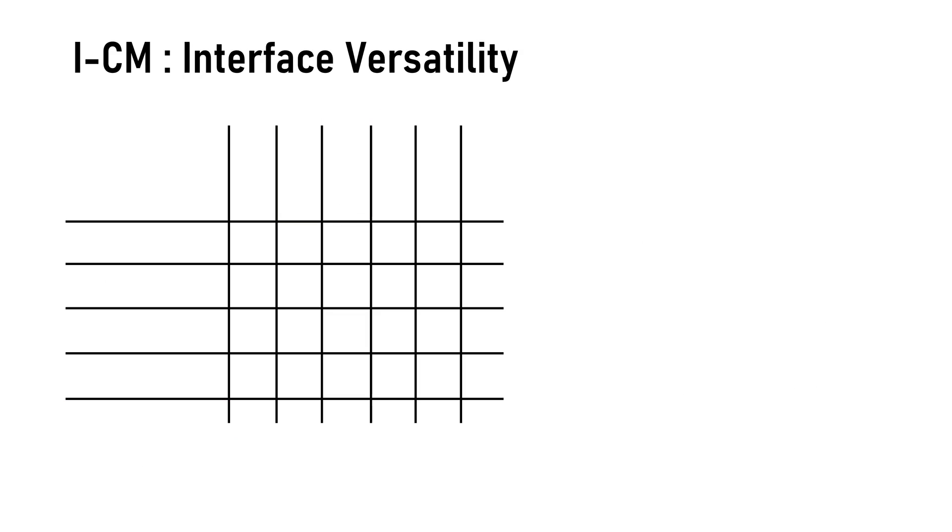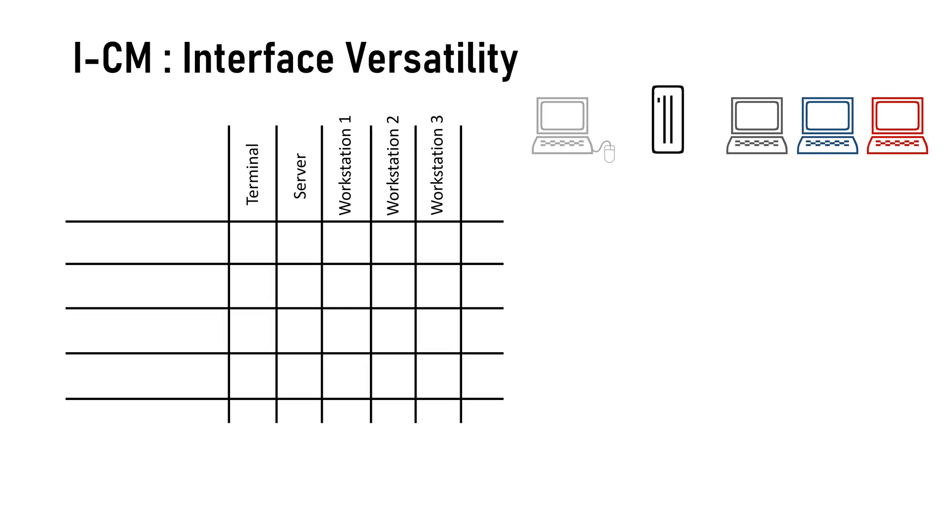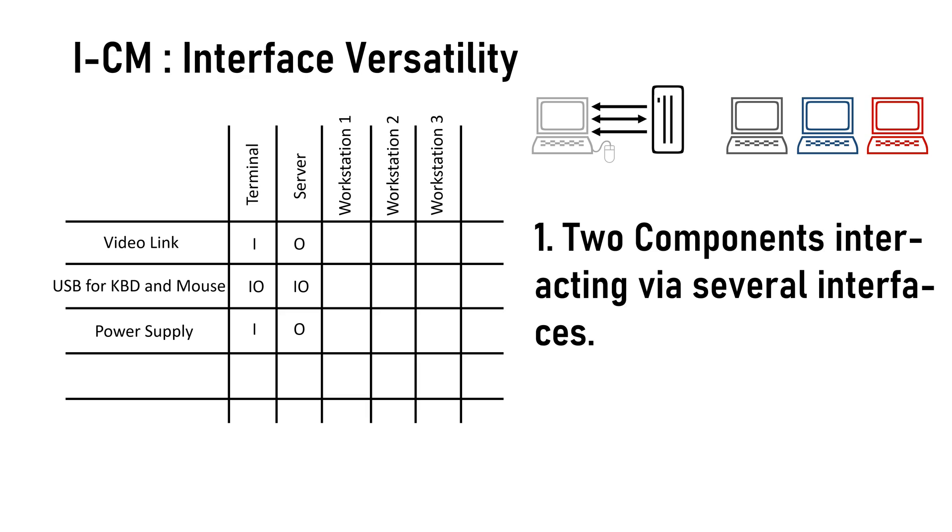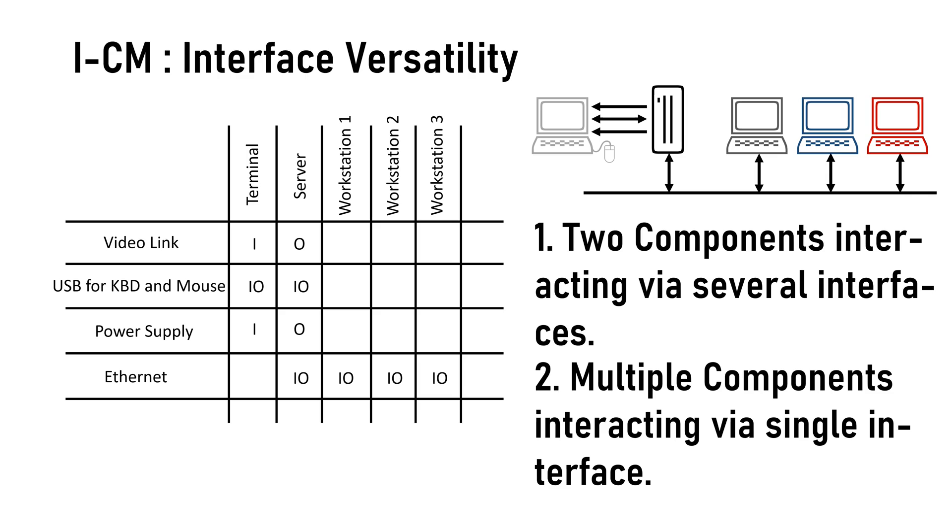The ability of ICM to work with interfaces goes way beyond the simple configuration of two components interacting via one interface with each other. Between two components we may have several interfaces with different configurations and for different purposes. Like in this example, the server provides power supply to the terminal but also provides a video output and uses USB connection to work with the keyboard and the mouse of the terminal. We can have one interface shared between multiple components as well like this bus network.